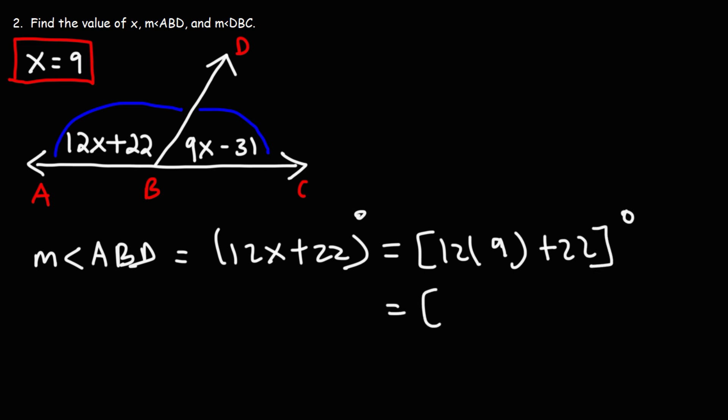So 12 times 9. 10 times 9 is 90. 2 times 9 is 18. 90 plus 18 is 108. And then 108 plus 22 is 130, which I can take away the brackets now.